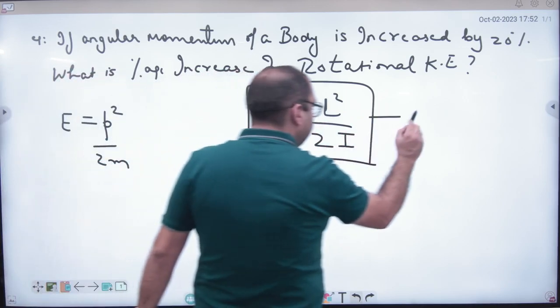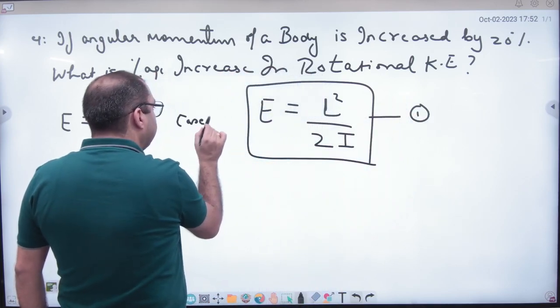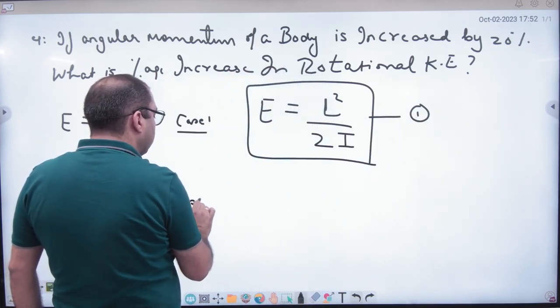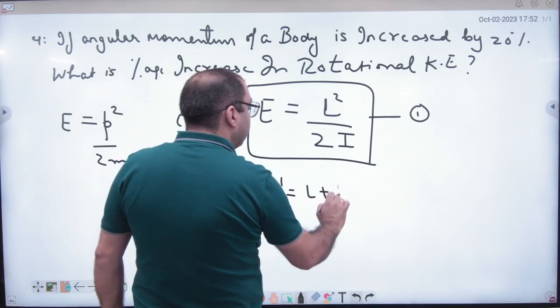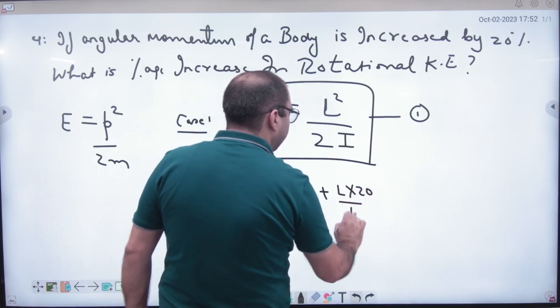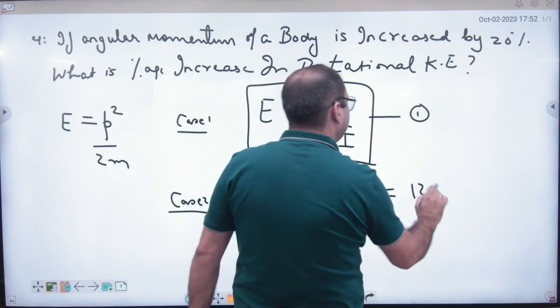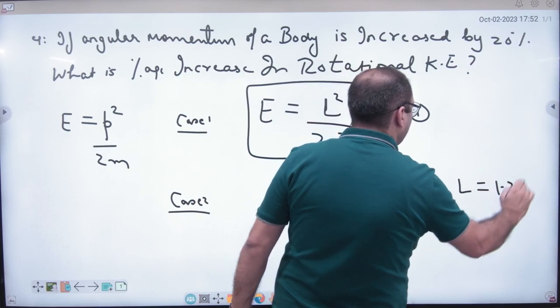This is your case number one. Case number two, what are we going to do? L's value increased by 20%, so L becomes 1.2L.